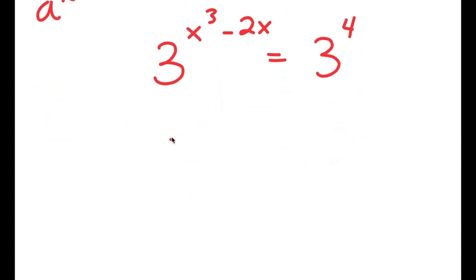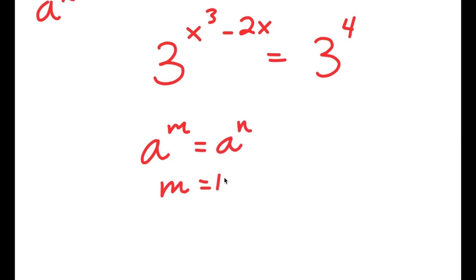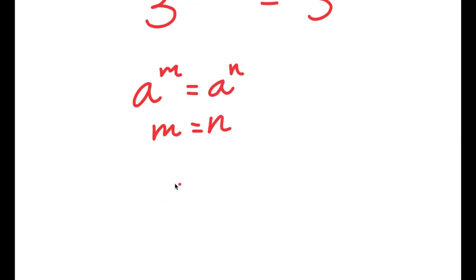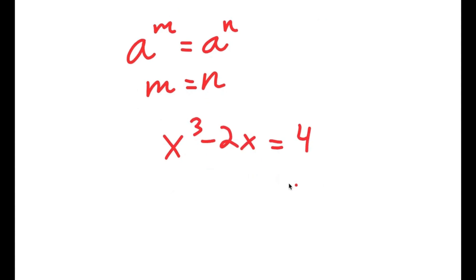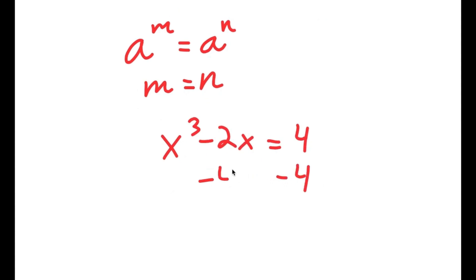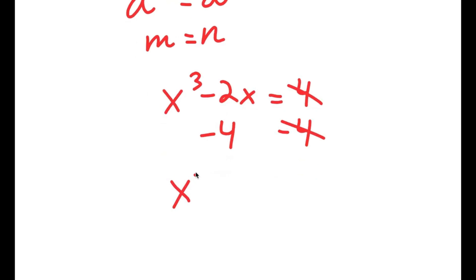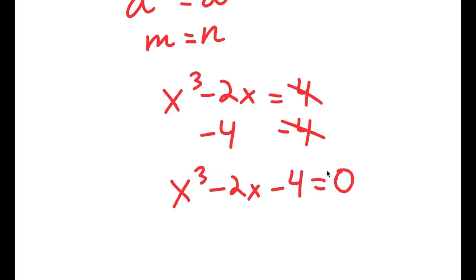Now, if I have something in the form a to the power of m equals a to the power of n, this means that m is equal to n. So x to the power of 3 minus 2x is equal to 4. And if I subtract 4 from both sides, I get x to the power of 3 minus 2x minus 4 is equal to 0.